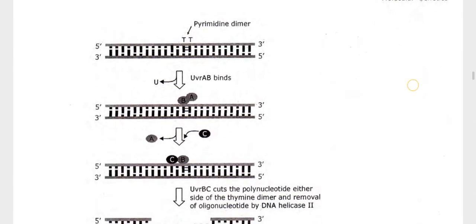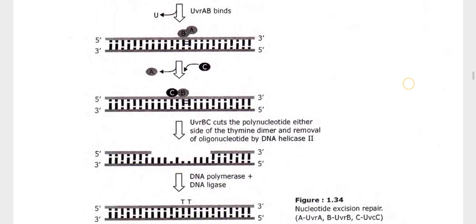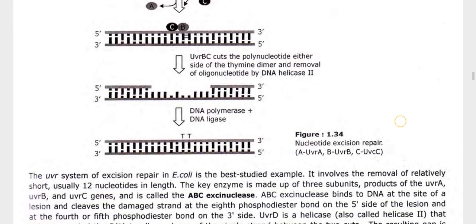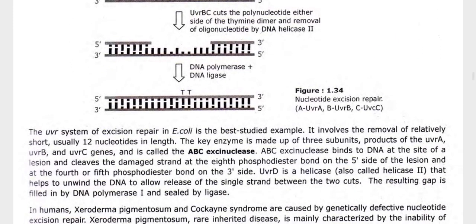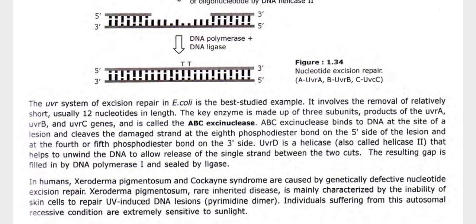In the nucleotide excision repair diagram: a pyrimidine dimer is recognized; UvrAB binds; UvrBC cuts the polynucleotide on either side of the thymine dimer; the oligonucleotide is removed; and the gap is filled by DNA polymerase plus DNA ligase.